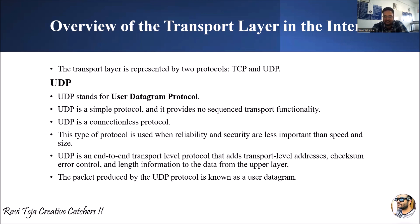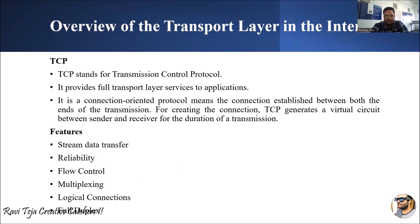UDP is an end-to-end transport level protocol that will have some sort of transport level addresses, checksum error control mechanisms, and also the length information about the data coming from the upper layers. The data packet produced by this particular UDP protocol is known as the user datagram, which will have several addresses, checksums, as well as length of the information related to the data packed into it. All the addresses, checksums, and length information will be integrated into the data packet, and that particular data packet is considered as our user datagram.